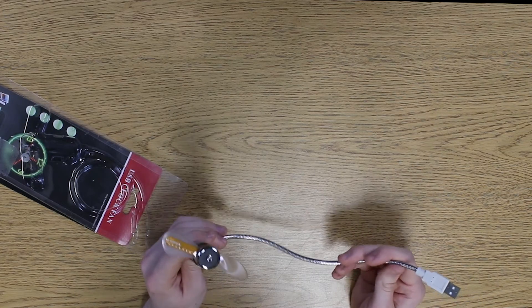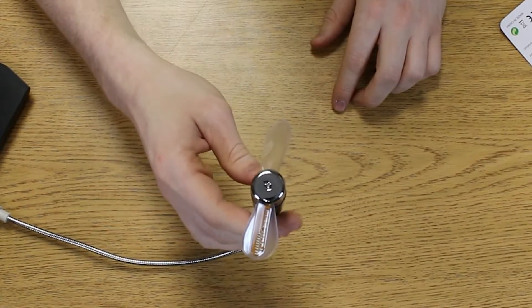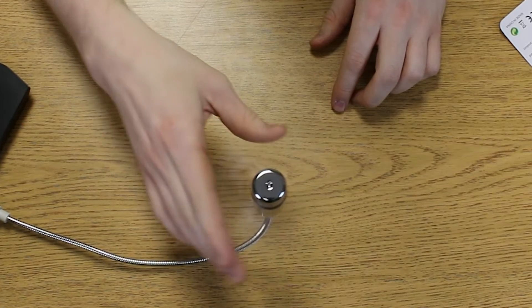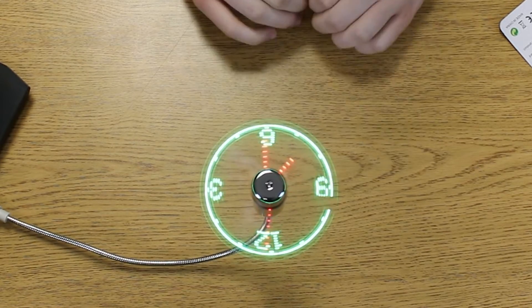We're going to plug this in and see how it works. Now to set this clock, you first have to hit the power button. That'll turn it on. Just wait a second and the LED lights display should show up. Cool little animation there.